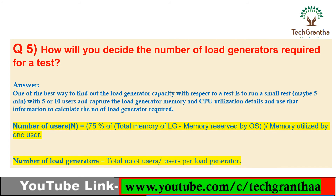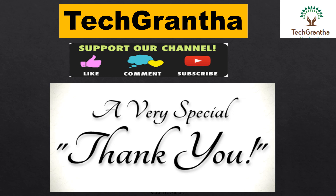The last and most important question: how do you decide the number of load generators required for your testing? You can run a small test for 5 to 10 minutes, then calculate your CPU utilization and memory utilization. For example, if 10 users consume 200 MB of memory over 5 minutes, use this formula: number of users equals 75 percent of total LG memory minus memory reserved for OS, divided by the memory utilized by one user. This gives you a clear idea of how many load generators you need.